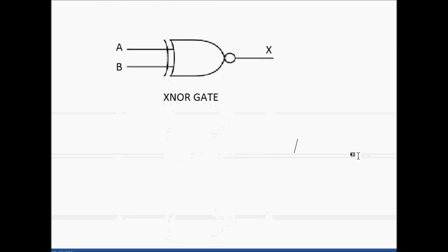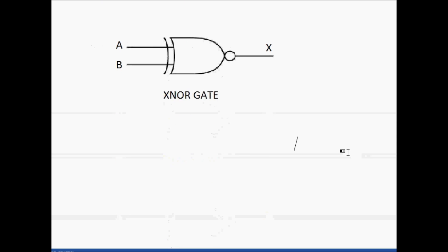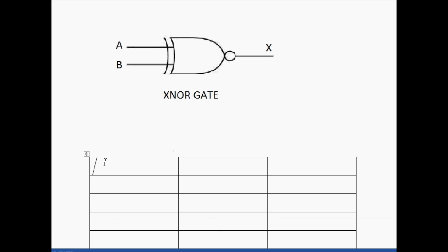Now let's write the truth table. A and B are inputs and X is output. The input combinations are: 0, 0 and 0, 1 and 1, 0 and 1, 1.